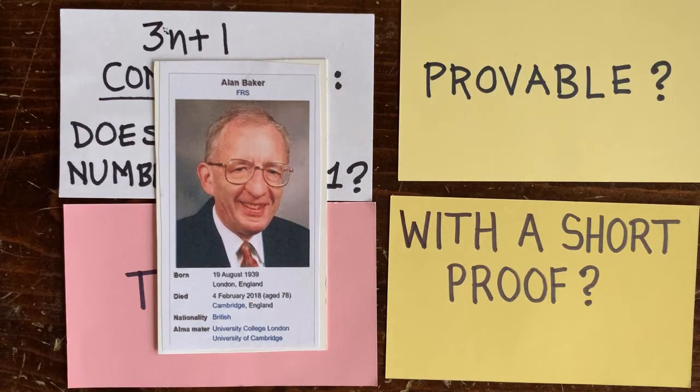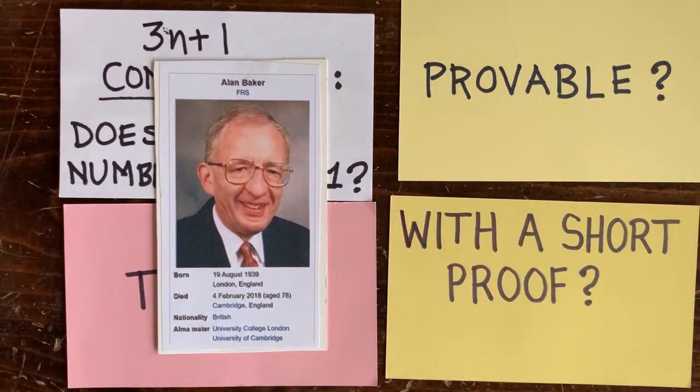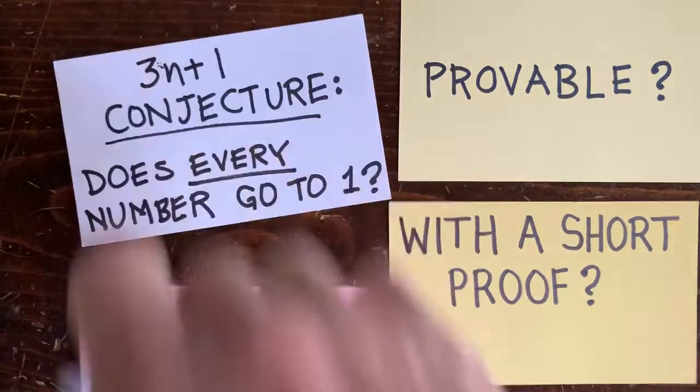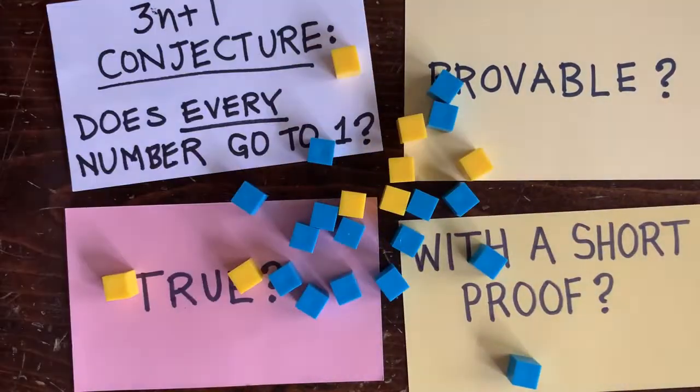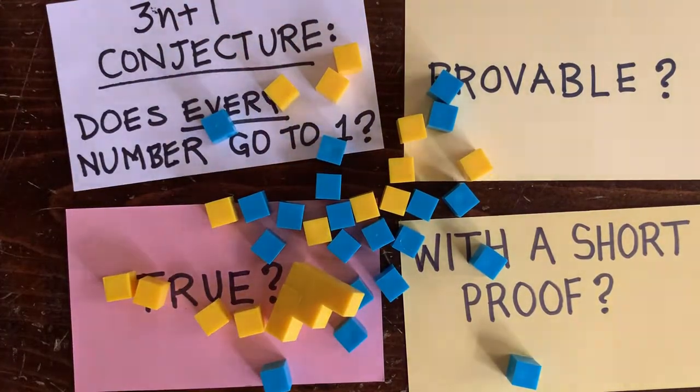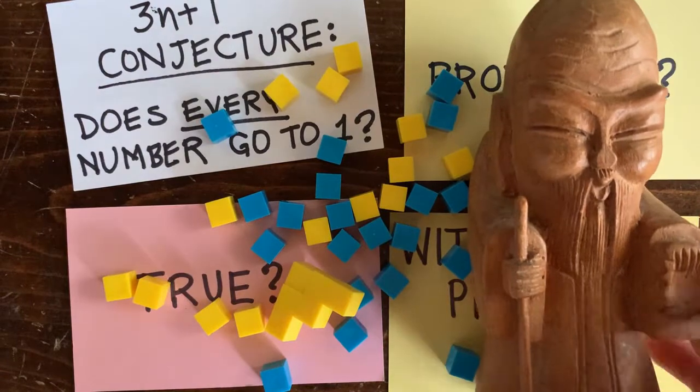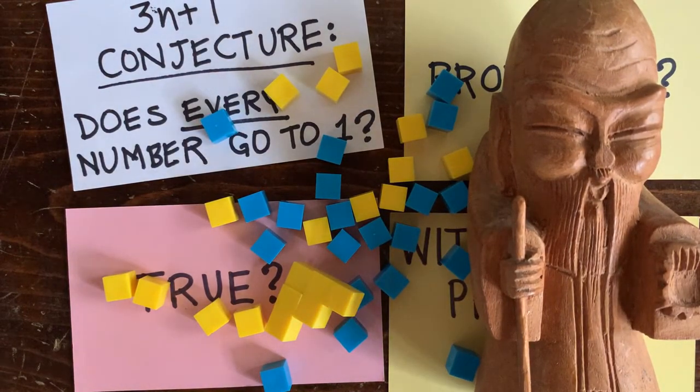So when an unsolved problem gets solved, sometimes the proof is long and people aren't even sure if it's right or not. And other times the proof's very short and everyone slaps their forehead and says, Why didn't I think of that? So we're going to assume the 3N plus 1 problem is true and provable and hope that the shortest proof isn't a thousand pages long. But occasionally, late at night, we might do some more philosophizing. Okay, see you in the next episode.